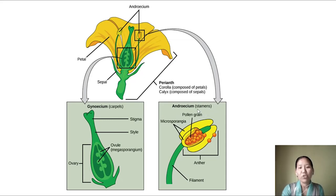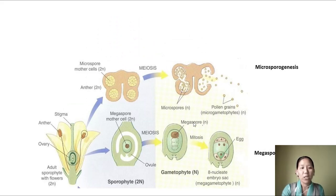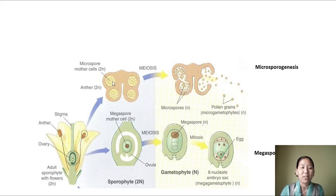The androecium or stamen has a long slender filament and an anther, and it is in the anther where the pollen grain develops. If you take a cross section of the anther you find four microsporangia. Each microsporangium contains a number of microspore mother cells arranged all along the length of the anther.